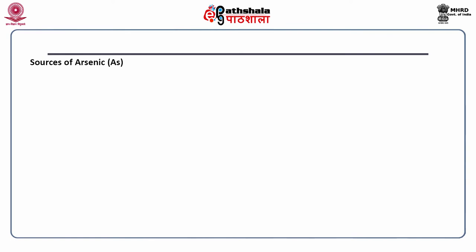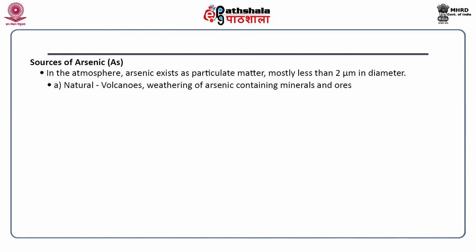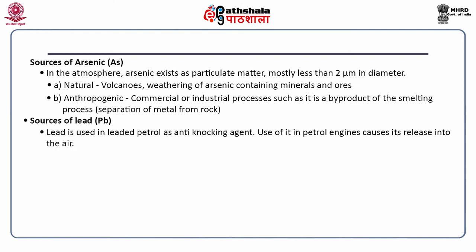Sources of arsenic: in the atmosphere, arsenic exists as particulate matter, mostly less than 2 micrometers in diameter. Volcanoes and weathering of arsenic-containing minerals and ores are natural sources. Commercial or industrial processes, such as smelting where arsenic is a byproduct, are the anthropogenic source. Sources of lead: lead is commonly used in leaded petrol as an anti-knocking agent. Lead-free petrol is now available, but earlier leaded petrol caused release of lead into the air.